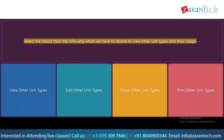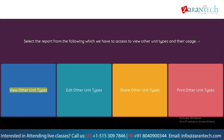Question: Select the report from the following which we have to access to view other unit types and their usage. Option 1: View Other Unit Types. Option 2: Edit Other Unit Types. Option 3: Share Other Unit Types. Option 4: Print. Answer: Option 1 – View Other Unit Types.